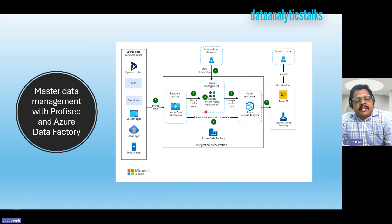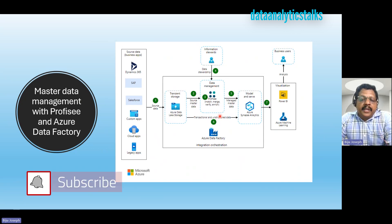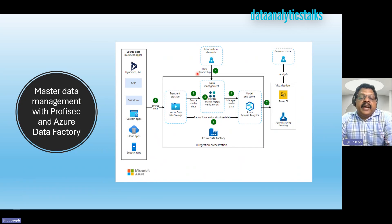The next stage is automated MDM processing. The data comes as-is into the MDM tool, and the MDM solution uses automated processes to standardize, verify, and enrich data. It identifies data quality issues, groups duplicate records like duplicate customers, and generates master codes and golden records. We had a detailed discussion on how golden records are created, and you can refer to that video for more information.